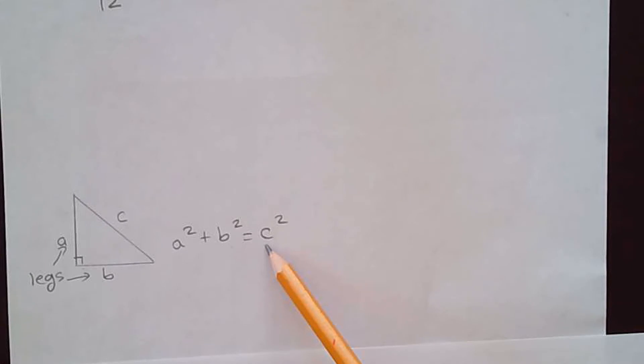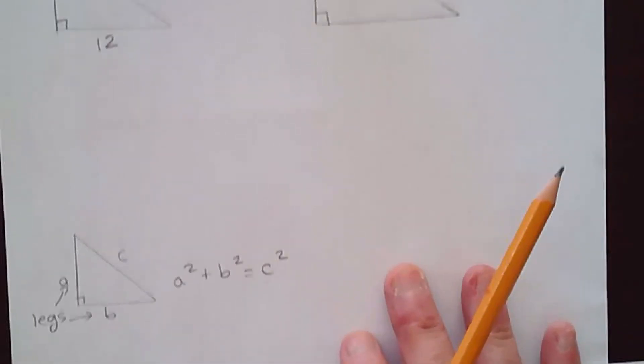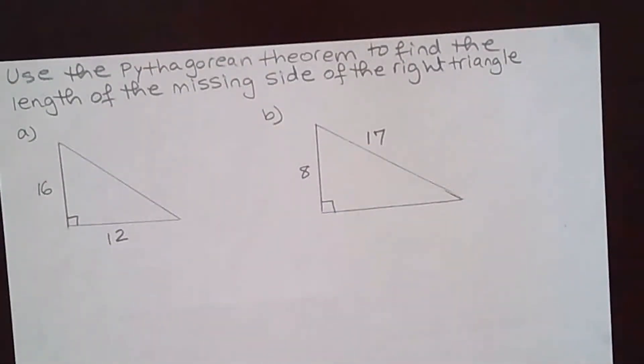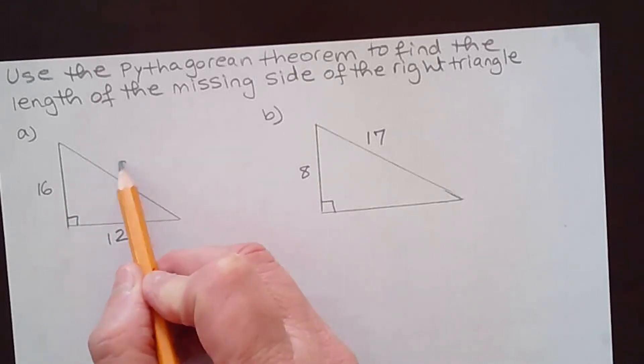a² + b² = c², where a and b are the legs and c is the hypotenuse. So using this theorem I can solve for the missing side in each problem. Let's use this particular problem. They gave me the legs of the triangle and they want me to find the hypotenuse.